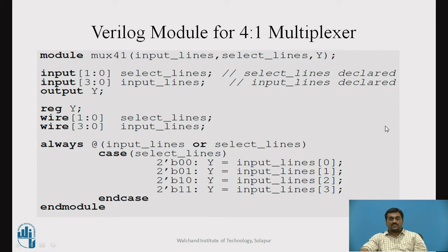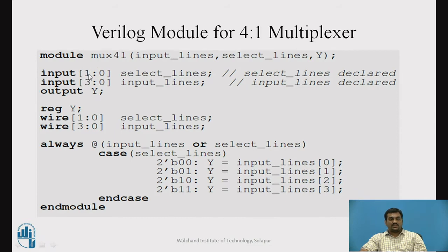Now let us discuss the Verilog module for the 4-to-1 multiplexer. The module definition will start with the module keyword. mux41 is the name of the module. Inside the bracket we provide the list of inputs and outputs: input_lines, select_lines, and Y. The select line, since we have two select lines, we are going to represent it as a vector. This vector select_line is represented with 1:0 inside the square bracket, and input is the keyword indicating the select lines are inputs. The 1:0 notation means the first bit is the MSB of the select line.